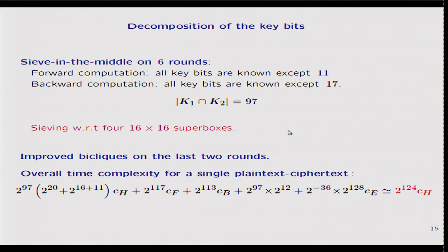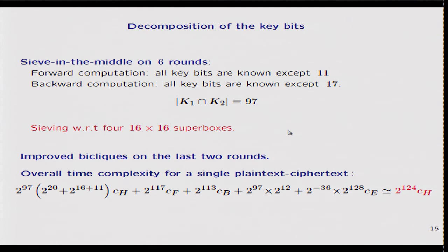We can add two more rounds at the end by the biclique construction, exactly as explained before, and this does not increase the data complexity — the data complexity of this attack is a single pair of plaintext and ciphertext. The construction of the bicliques increases the time complexity a little, and this is the bottleneck of the attack. The overall time complexity corresponds to 2^124 evaluations of two rounds of PRINCE, which is smaller than the 2^128 expected for security of PRINCE.